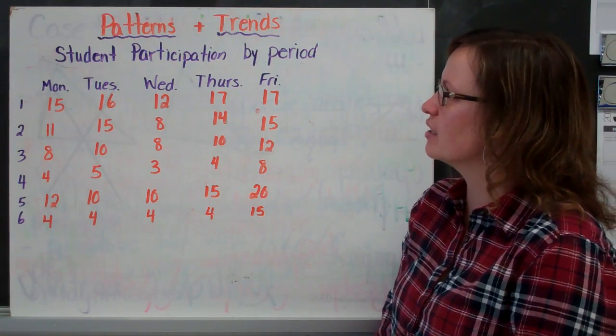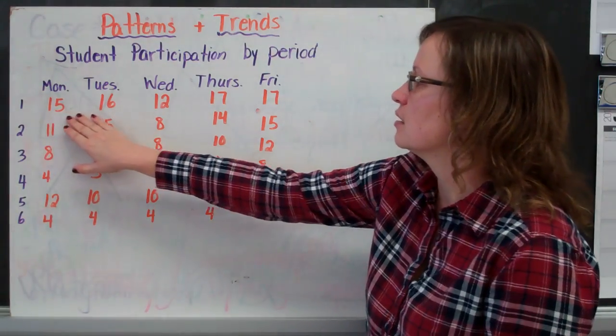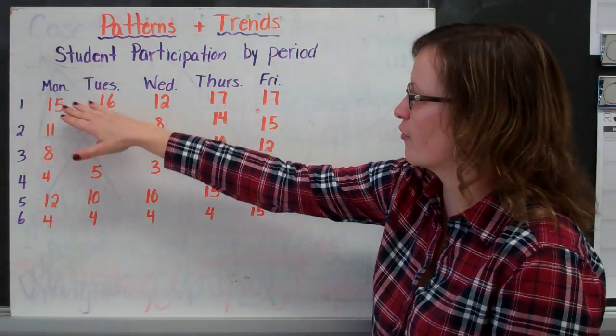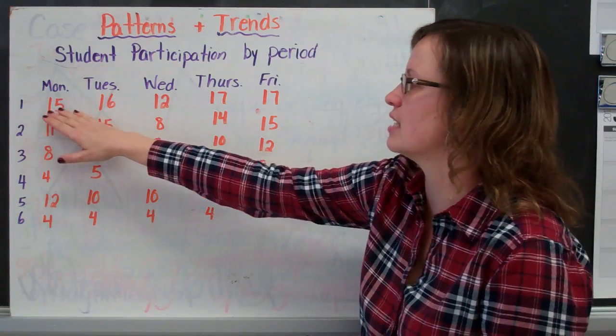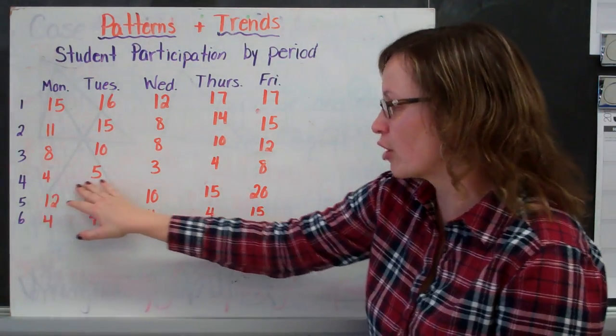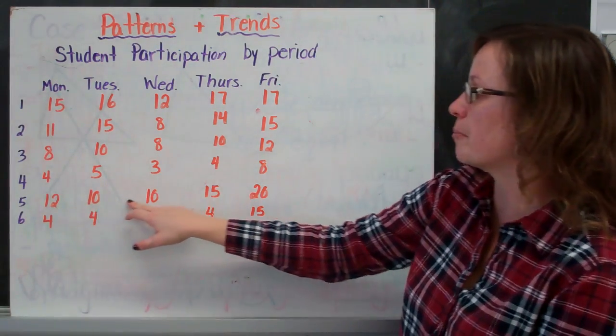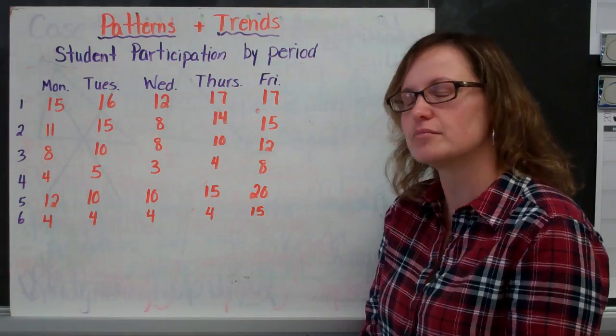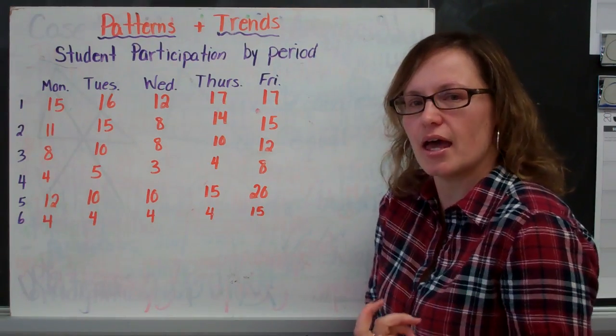But can I make any interpretations based on this data? So I might make the interpretation that there's a trend that after a break, so when the students first come in in the beginning of the day, there's the most participation. And then after fourth period, when they have lunch recess, there is a jump again in participation. Now, how would I represent that? Come up with some ideas and be willing to share.